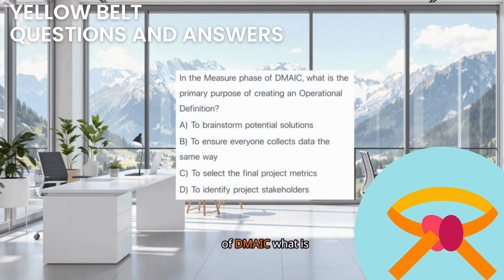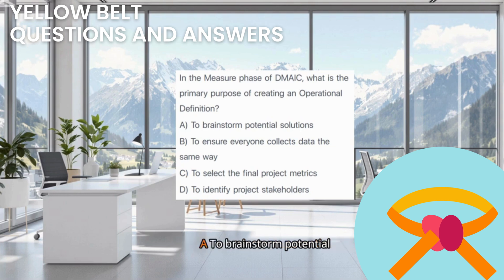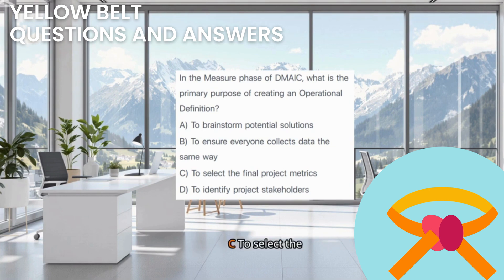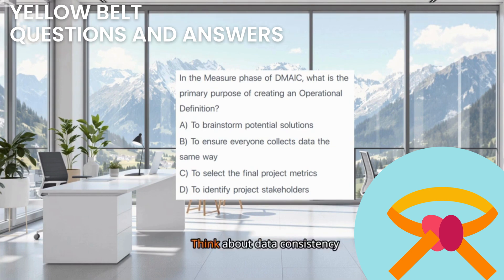In the Measure phase of DMAIC, what is the primary purpose of creating an operational definition? A. To brainstorm potential solutions. B. To ensure everyone collects data the same way. C. To select the final project metrics. D. To identify project stakeholders. Think about data consistency.